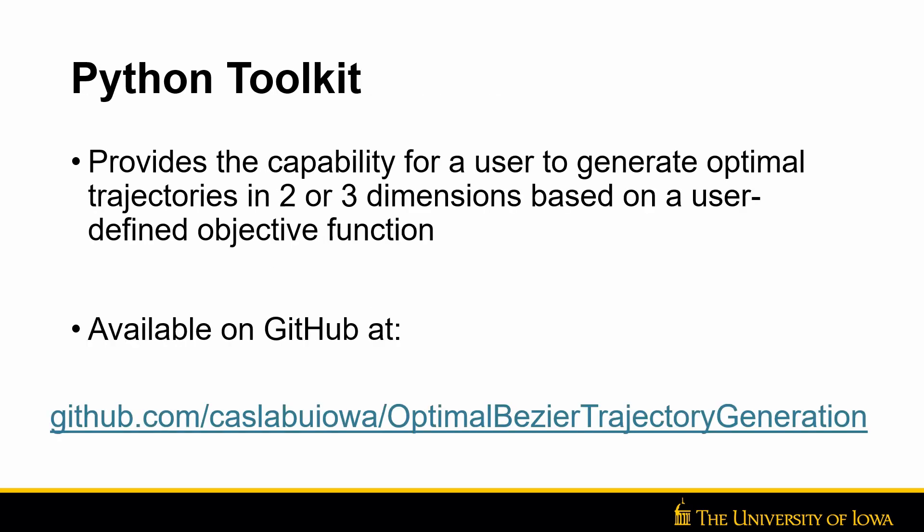We built a toolkit on top of the idea of Bernstein polynomials using the Python programming language. The toolkit provides a capability for a user to generate optimal trajectories in two or three dimensions based on a user-defined objective function.